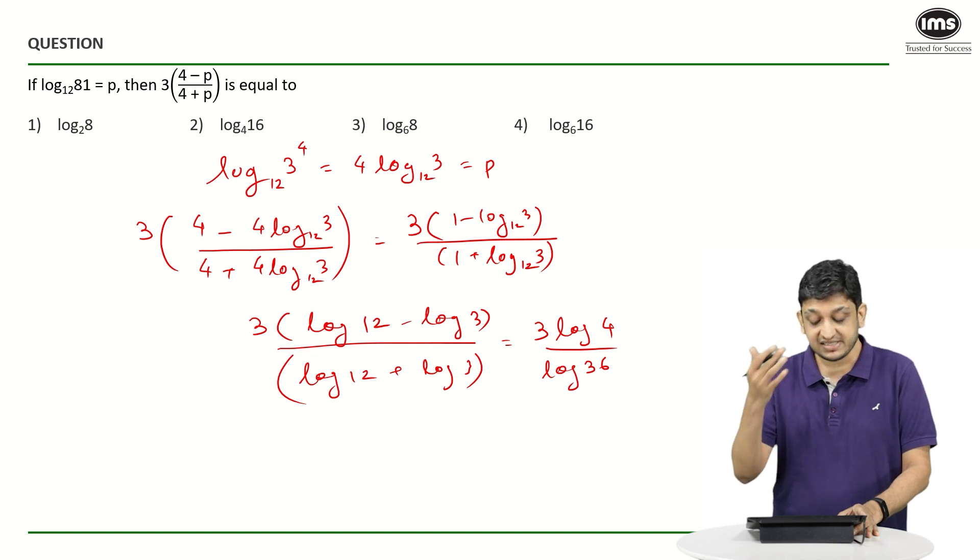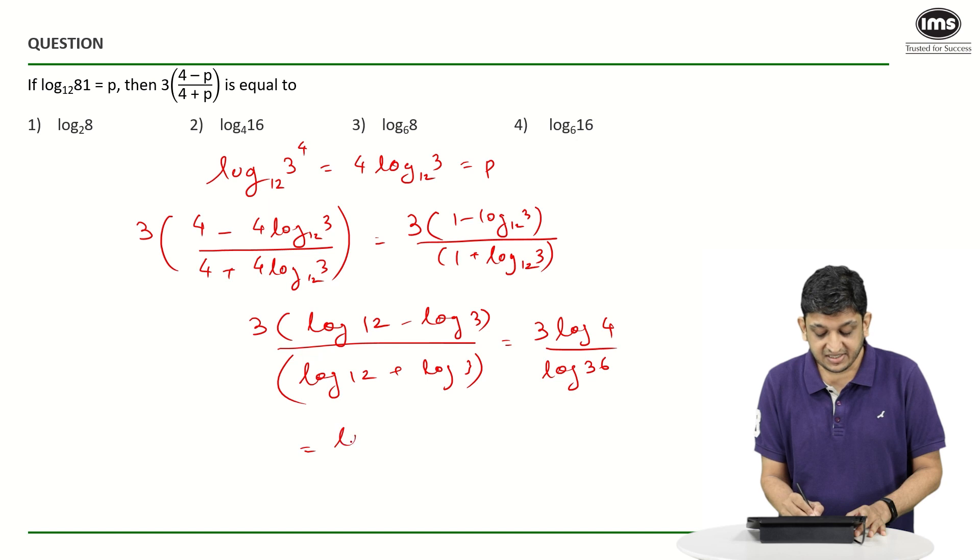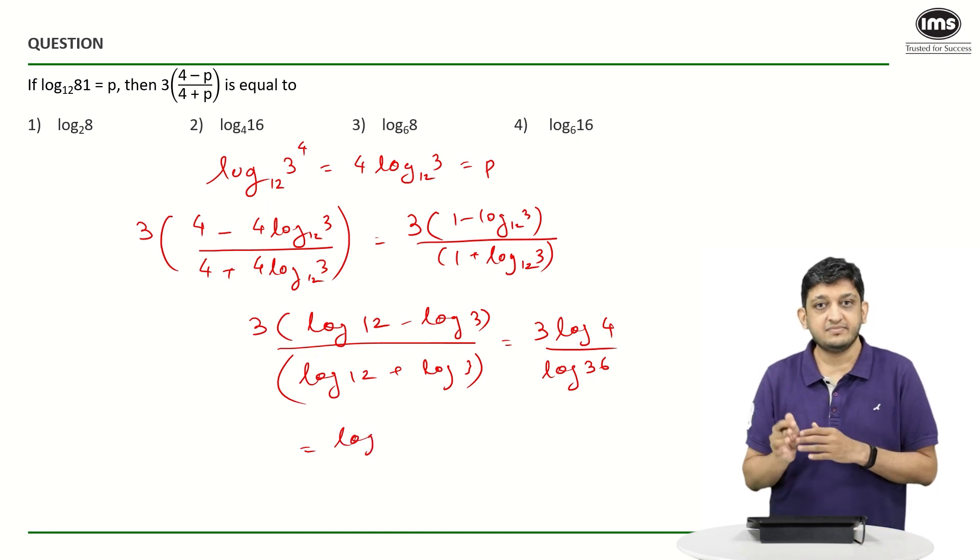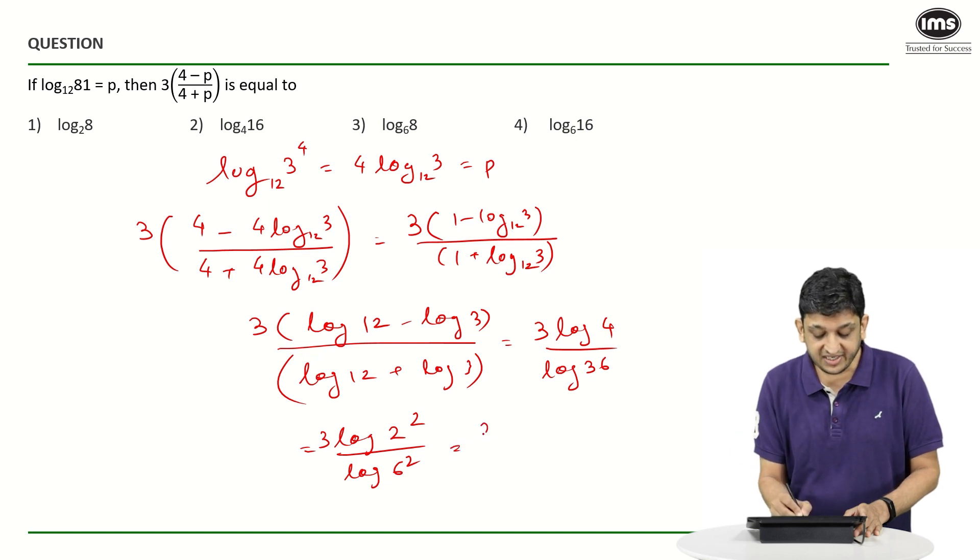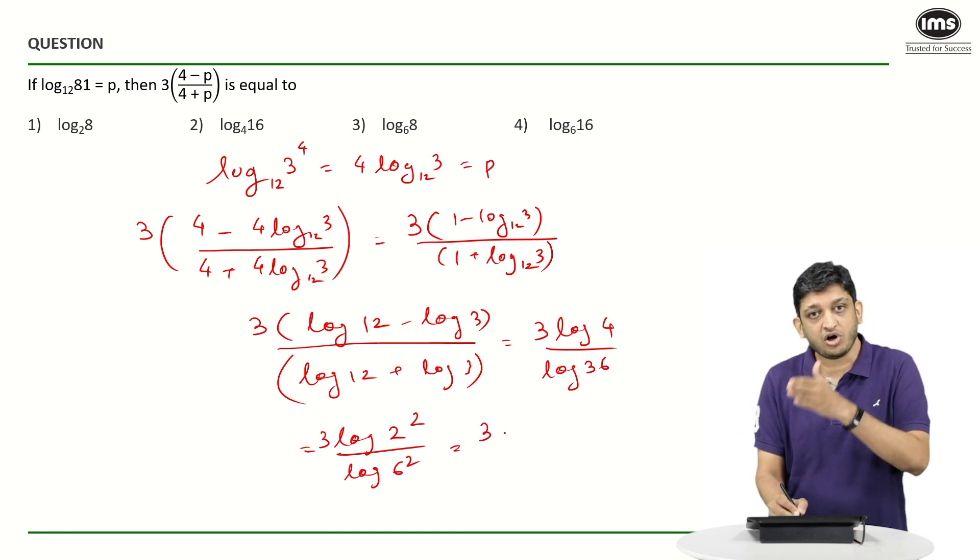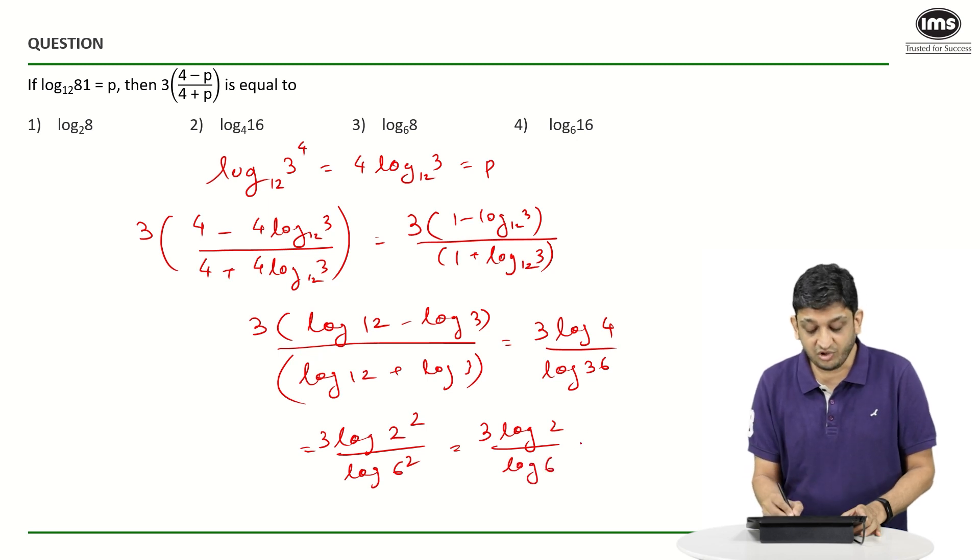So, log 4 by log 36 times 3. What we can do is we can simplify this as log of 2 square times 3 or we can say it is going to be 3 times log of 2 square divided by log of 6 square. What we are going to get here is 3 into 2 log 2 divided by 2 log 6 that 2 will get cancelled out and we will be left with 3 times log 2 by log 6. If you want to write it in a simplified format it is going to be 3 times log 2 to the base 6.